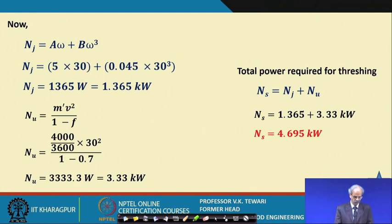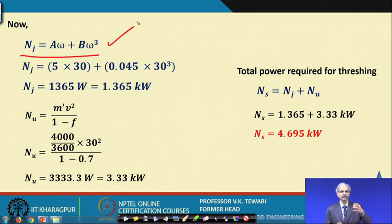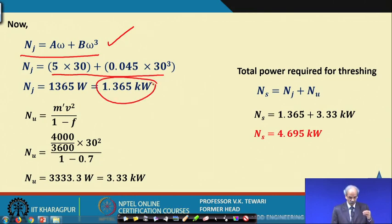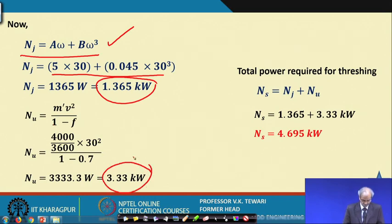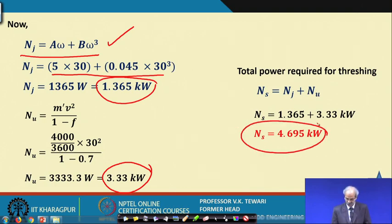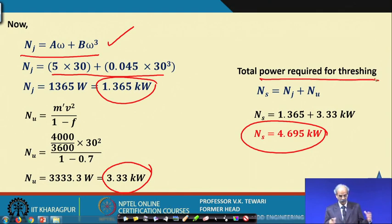Substituting the values into the equation, Nj (the idle resistance) comes out to 1.365 kW. The useful work component is then calculated, and the total power required comes to 4.695 kW for this wheat thresher at the given operating conditions and feed rate.